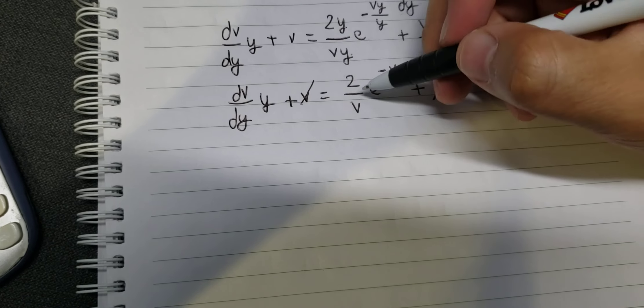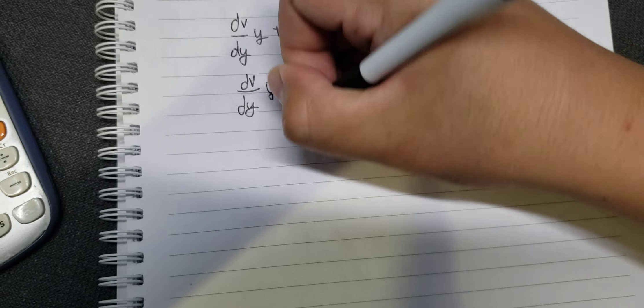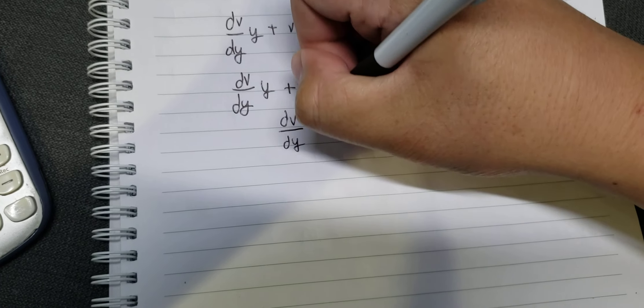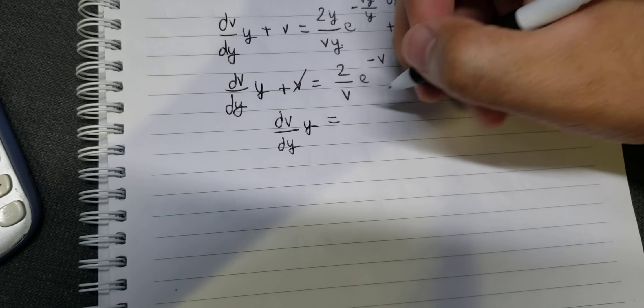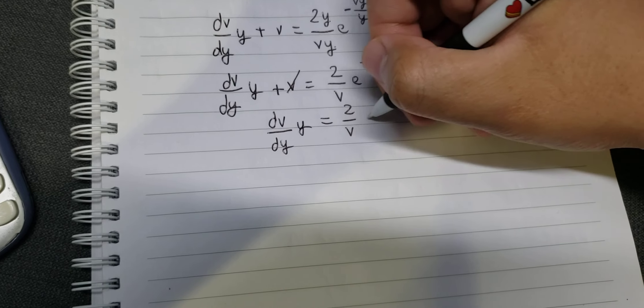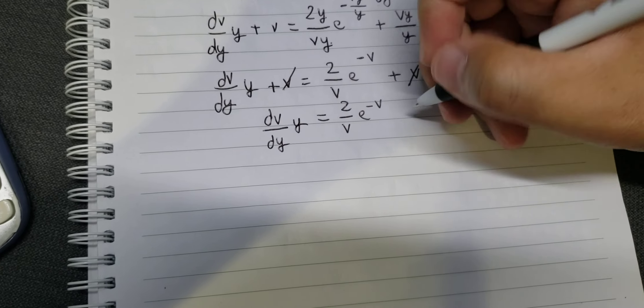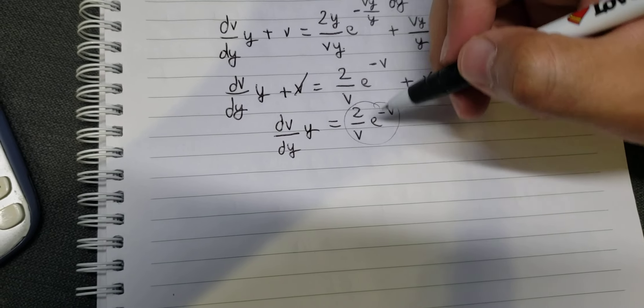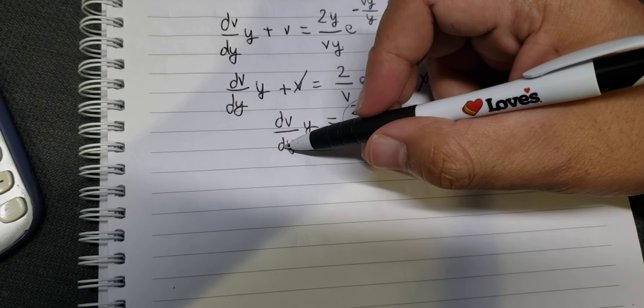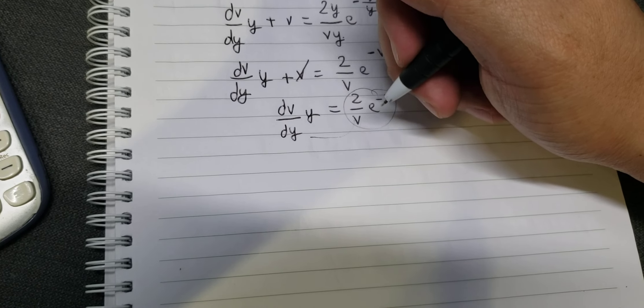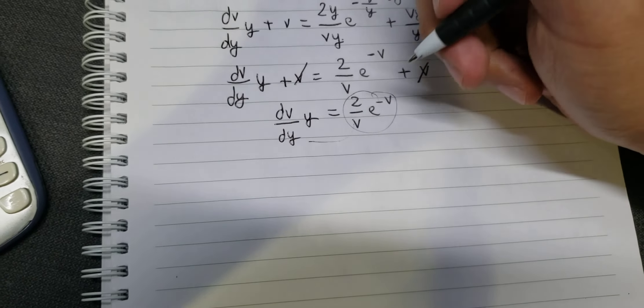Now I'll rearrange this. I'll move dv to the left and dy and y to the right, so we have like this.